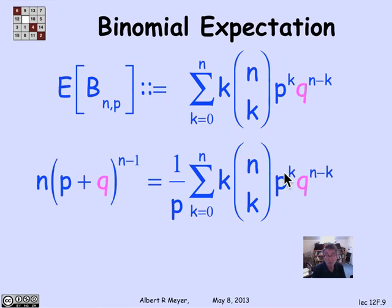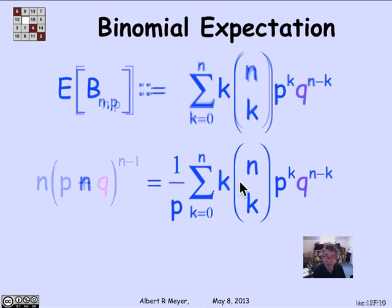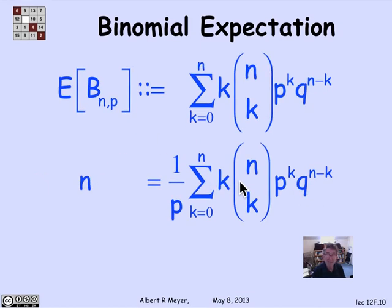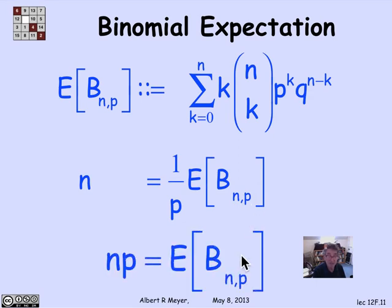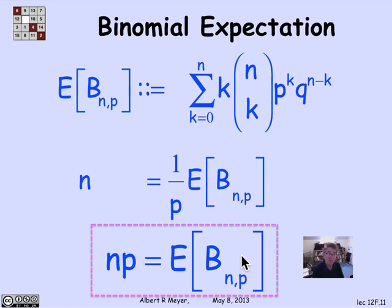And what happens? So I just plug in the p and q. Now the left-hand side, p plus q is 1, so the left-hand side is going to become n. And this right-hand side now is exactly the expectation of BNP, this part of it anyway. So what I'm going to wind up with is that n is equal to 1 over p times the expectation of BNP. In other words, the expectation of BNP is n times p. And that is the basic formula that we were deriving by first principles without using any general properties of expectation, just the definition of expectation and the stuff that we had already worked out in terms of the binomial theorem.